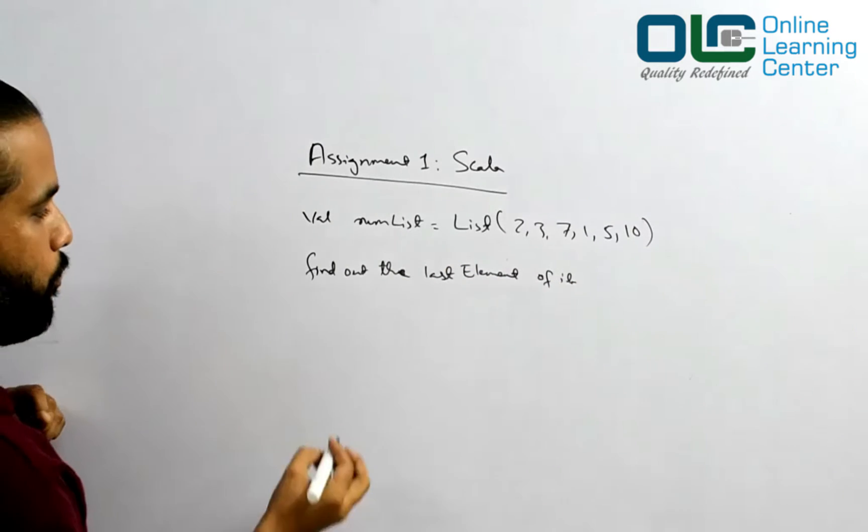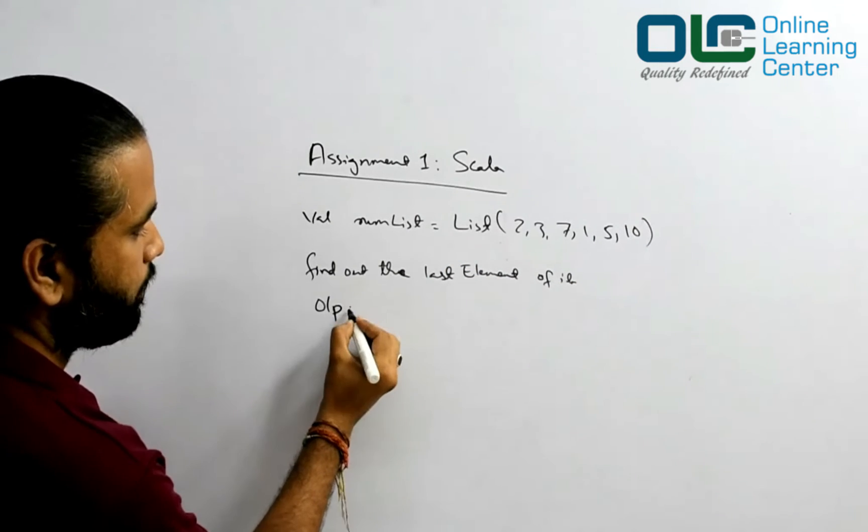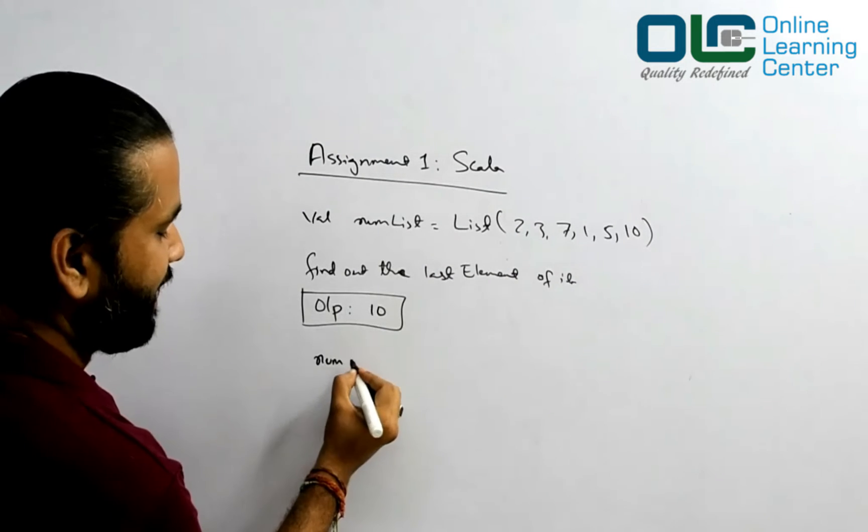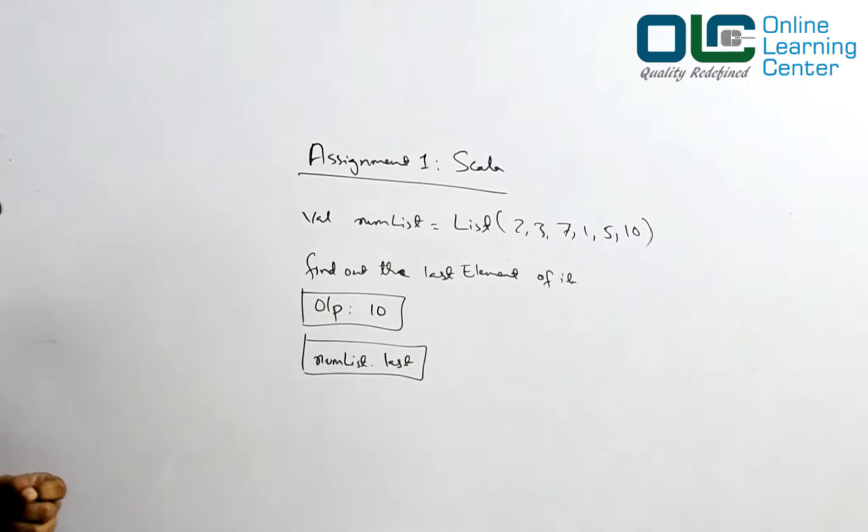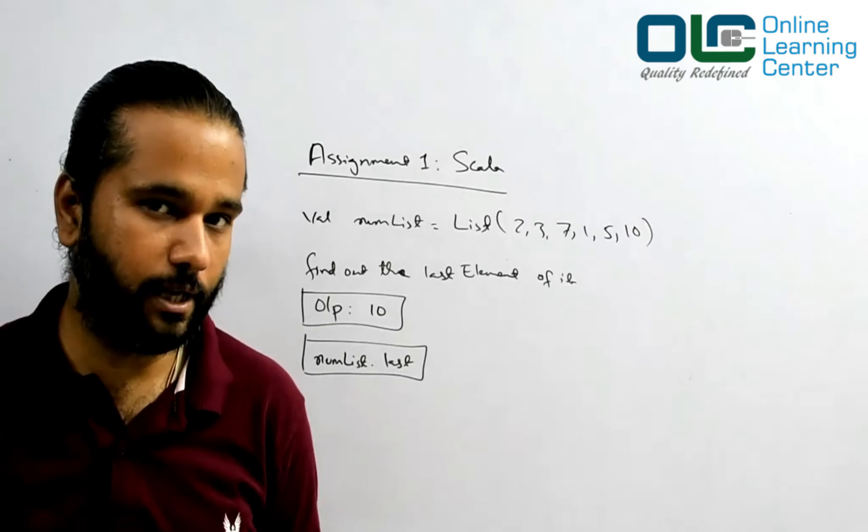So what should be your output? Your output should be in this case 10. You may say, hey, I can do it very easily like numList.last. Yes, you can definitely do it, but that is not the requirement.